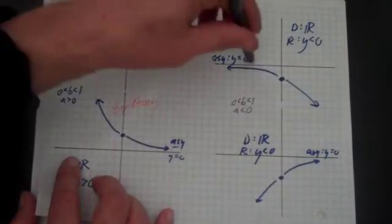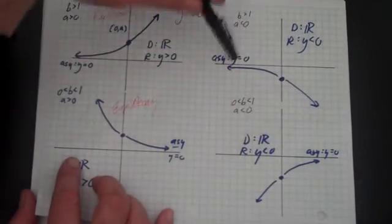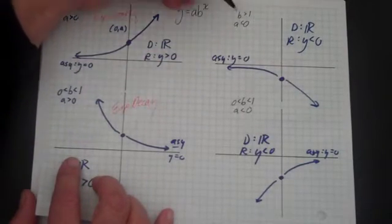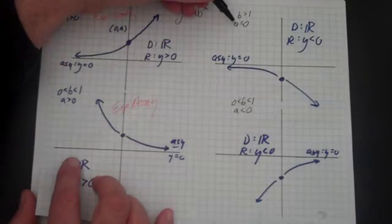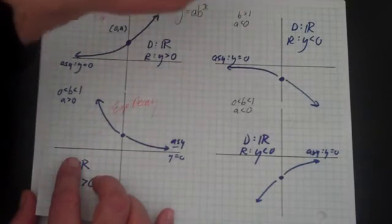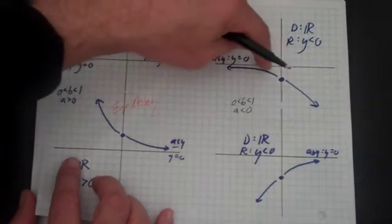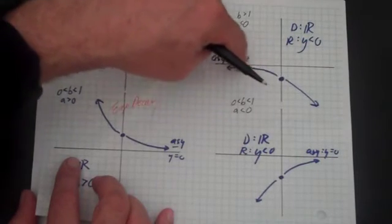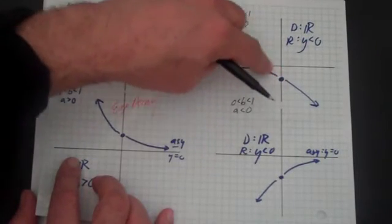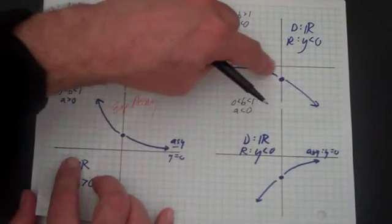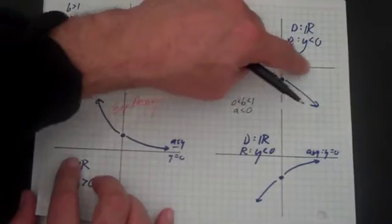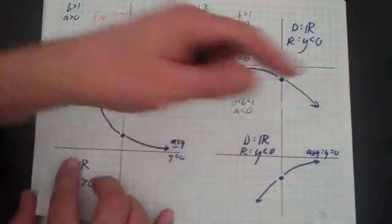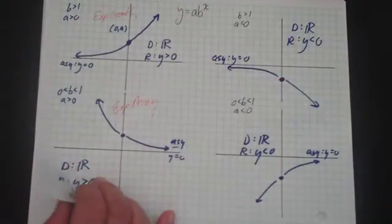Let's look at exponential growth flipped. That's when y equals a·b^x, where b is greater than 1 and a is less than 0. When x goes to negative infinity, see how the graph gets closer and closer to zero — closer and closer to the asymptote. And as x goes to positive infinity, y goes toward negative infinity.